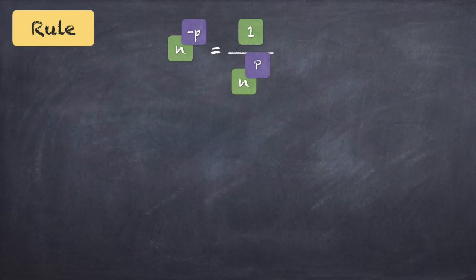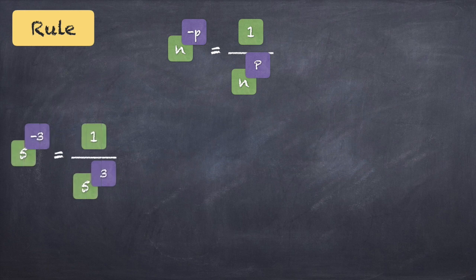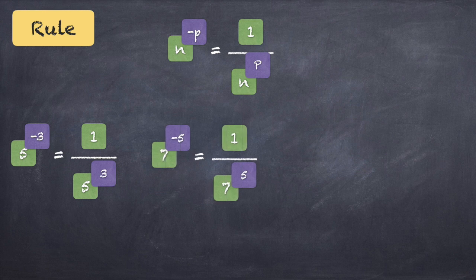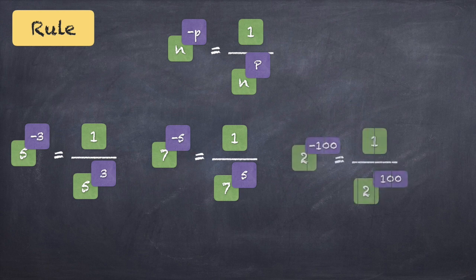The rule is: say a number n is raised to a power p and the power is negative — n raised to minus p — it is the same as saying 1 upon n raised to p. The proof of it is in the previous example: 3 raised to 3 divided by 3 raised to 5 gives you 3 raised to 2 in the denominator, or 3 raised to minus 2 according to the formula.